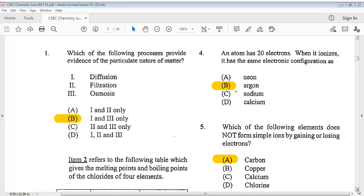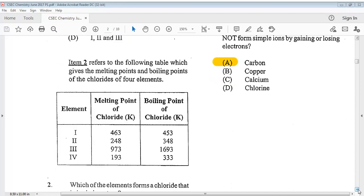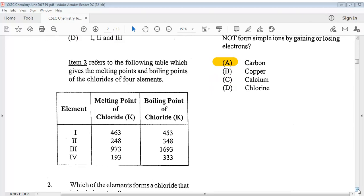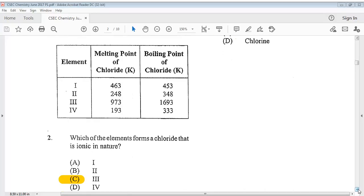Let's go on to question number 2. It says, item 2 refers to the following table which gives the melting points and boiling points of the chlorides of four elements. So you can take a look at the table there. It says, which of the elements forms a chloride that is ionic in nature? The answer is C.